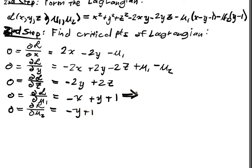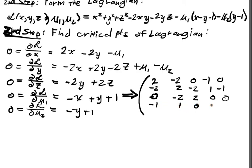And this, these all give us the following augmented matrix, right? So this is just a system of linear equations, so we'll solve it using our augmented matrix and Gaussian elimination. It'll be 2, -2, 0, -1, 0; -2, 2, -2, 1, -1; 0, -2, 2, 0, 0; -1, 1, 0, 0, 0.